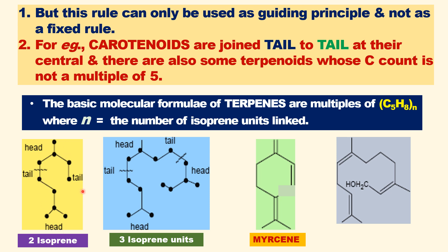This is the skeletal structure of myrcene. There are two isoprene units — head, tail, head, tail. This example with three isoprene units shows them linked by a 1,4-linkage, that is, head-to-tail fashion. Myrcene consists of two isoprene units connected in a head-to-tail manner. This is an example of a terpenoid with three isoprene units connected by a head-to-tail fashion.